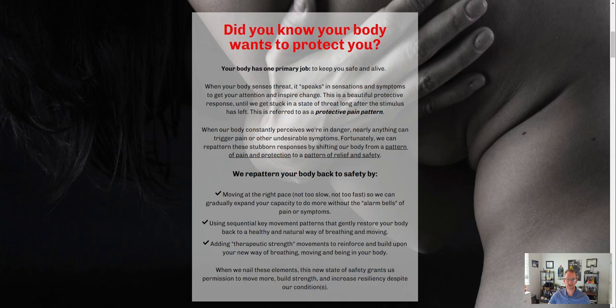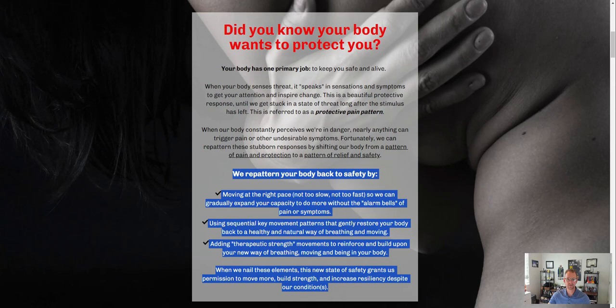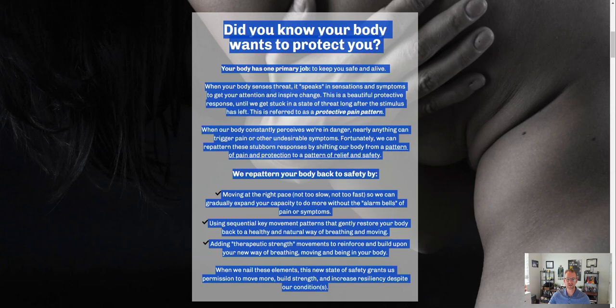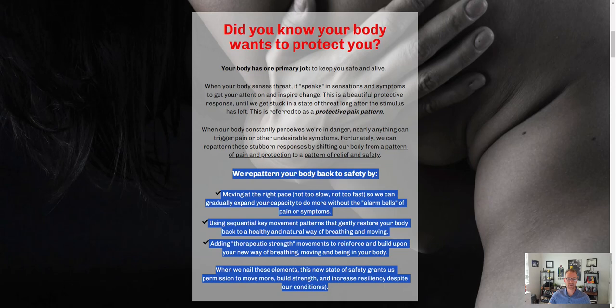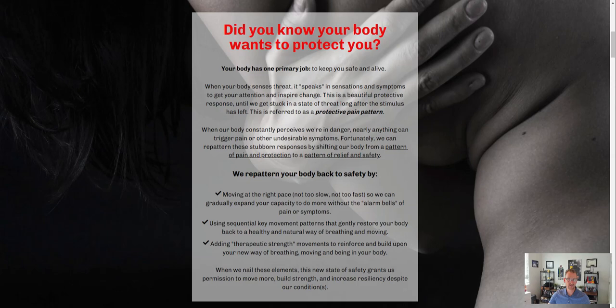Here there's a statement about how the body wants to protect you and get back to an environment of safety, and then you get into what I would call the plan: how do we do it? We repattern your body, we move at the right pace, we use sequential key movement patterns. This is a lot of text for me personally. These look like possibly two different sections — this could be something more like the plan, which you could break down into steps. There's probably a hundred steps they're going to have to take to get better.